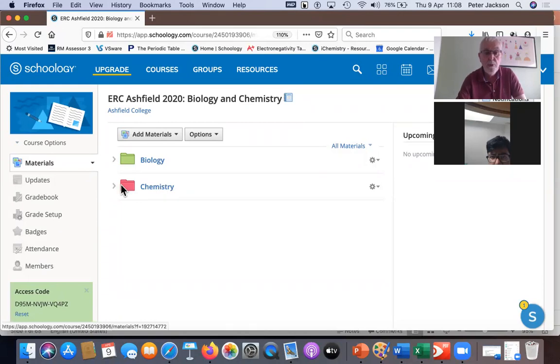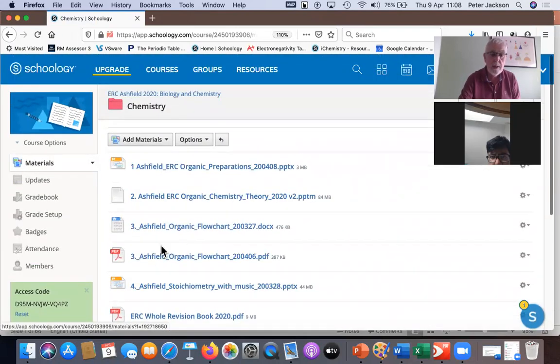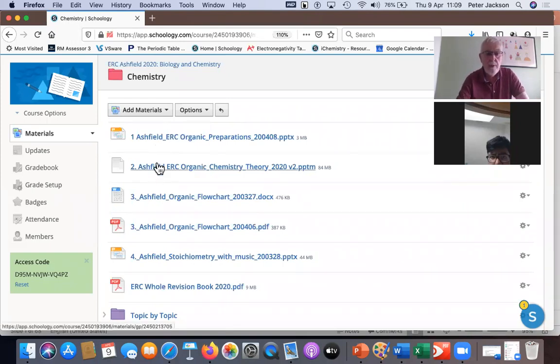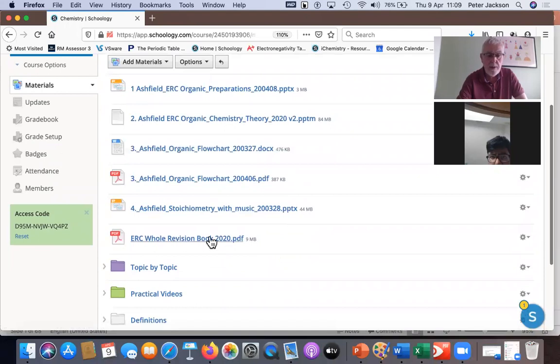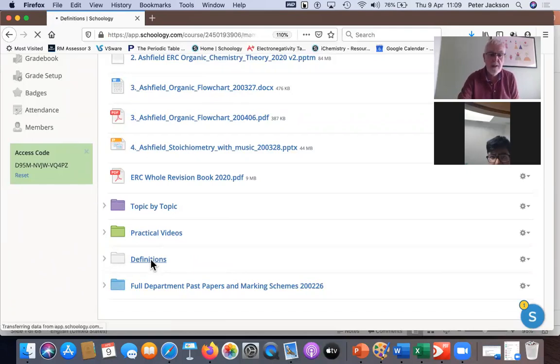Let's look at chemistry. You don't click in the folder, you click on the name, and then you get all the things that are here. So here are the lessons. We're going to start off with organic preparation. There's organic chemistry theory, there's an organic chemistry flowchart, there's a word document and a PDF document, PowerPoint on stoichiometry, and a revision book. Then there are these folders here which are very, very useful.